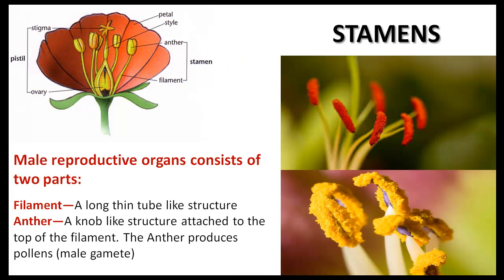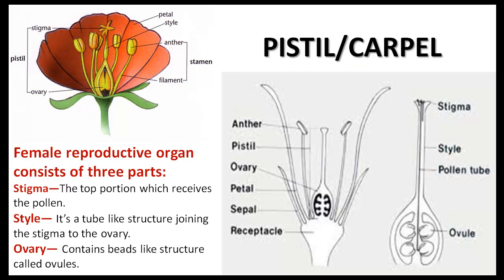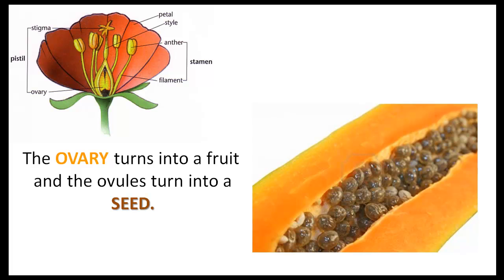If we remove the sepals and petals, we can see the next whorl — the stamens. They are the male reproductive organs and consist of two parts: a filament, which is a long thin tube-like structure, and an anther, a knob-like structure attached to the top of the filament. The anther produces pollen grains, which are the male gametes. The innermost part of a flower is called the pistil or carpel — it is the female reproductive organ. The top portion which receives the pollen is called the stigma. A tube-like structure joining the stigma to the ovary is called the style, and the ovary contains bead-like structures called ovules.